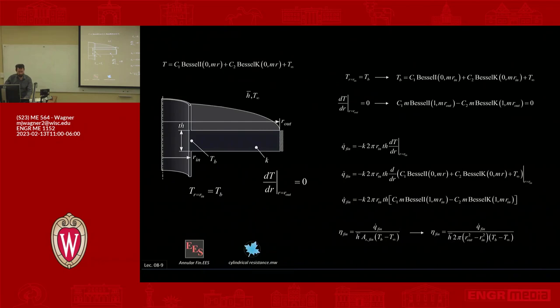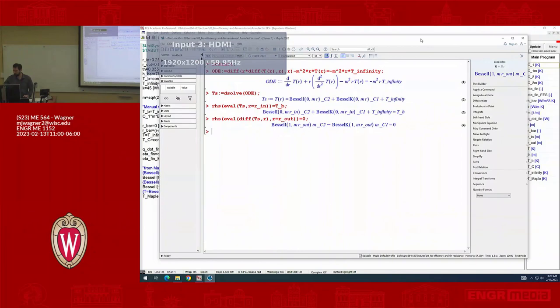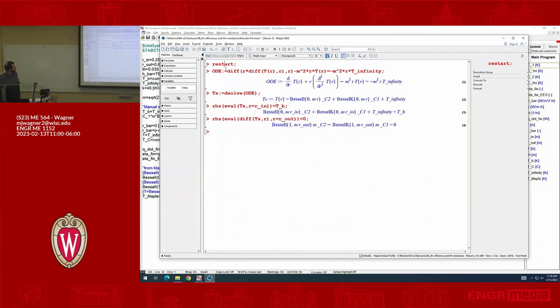Alright, so that's that example. Let me just show you how this is programmed into EES. Well, first of all, if we wanted to do the same evaluation in Maple we would do it like this. So we'd say here's our ODE: it's r·dT/dr minus this constant which we're calling M squared times r·T(r), and then the stuff on the right-hand side is exactly what we had before.